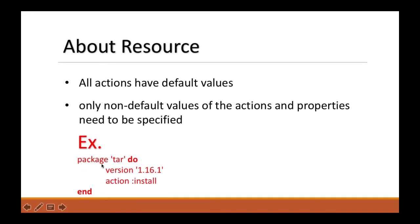Here, the package resources default action is install. So if you omit both of the lines, that is version 1.16.1 and the action install, then also the chef client will install the tar package. In this case, the chef client will assume that the default action is install and the default property is version 1.6.1, the latest version.